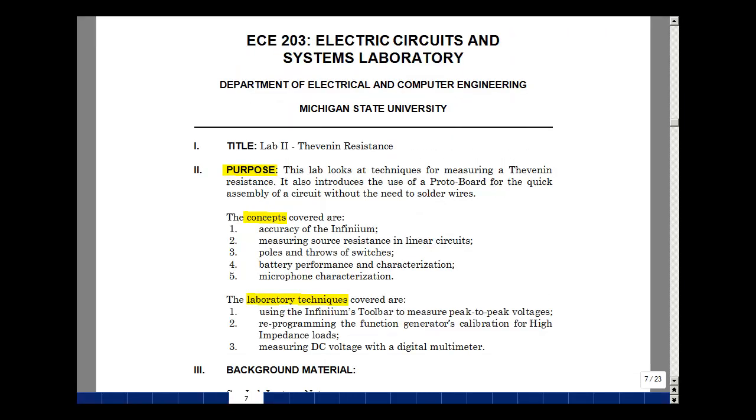The purpose of this lab is to take a look at some of the techniques of measuring Thevenin resistance. We're also going to use a protoboard or a solderless board for quick assembly and disassembly of our circuits without needing to solder. The concepts that are covered are the accuracy of the Infinium, measuring source resistance in linear circuits, poles and throws of switches, battery performance and characterization, and microphone characterization. So the lab techniques we're going to cover are the use of the Infinium's toolbar to measure peak-to-peak voltages. We're going to reprogram the function generator's calibration for what are called high impedance loads, and lastly, we're going to measure DC voltages with a digital voltmeter. Now, before you come to the lab, I'd like you to read the lab itself, and you'll have a quiz at the beginning of this lab that's going to cover this lab lecture, the video that goes along with it, and the lab experiment itself. And this is lab number two.